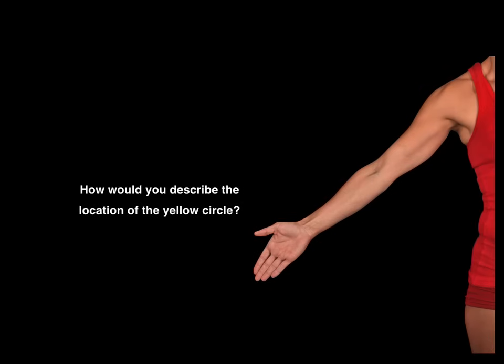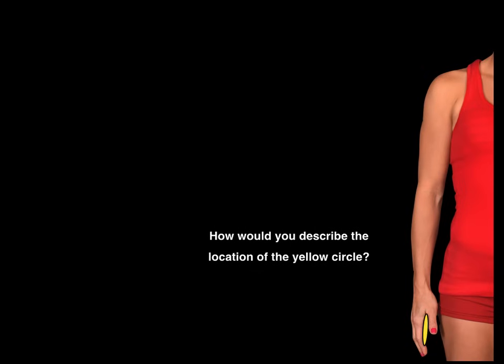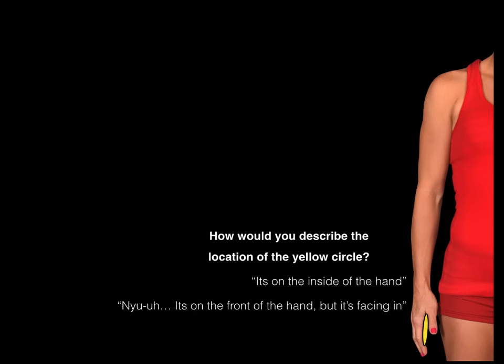How would you describe the location of the yellow circle? You'd probably say, hey, that's on the front of the hand. Now, how would you describe the location of the yellow circle? Some may say, oh, it's on the inside of the hand. Another may say, it's on the front of the hand but it's facing in. Someone else can say, can't we just say it's still on the front of the hand?